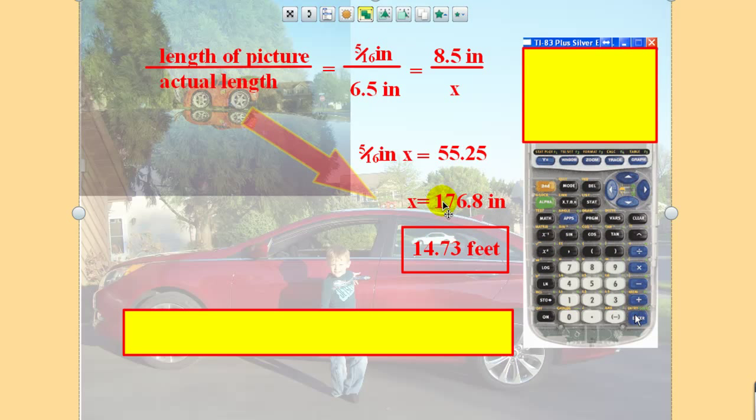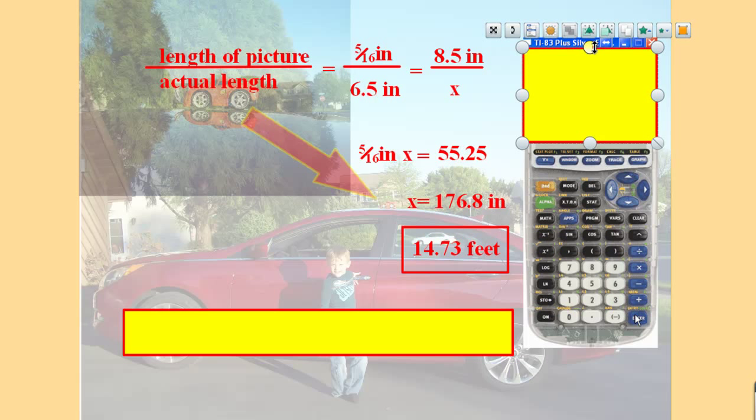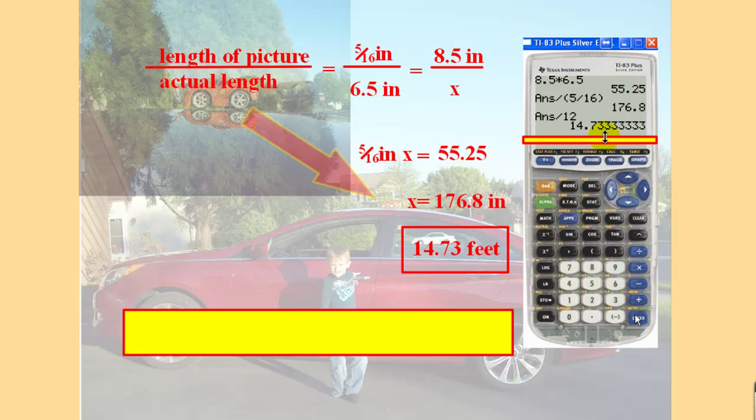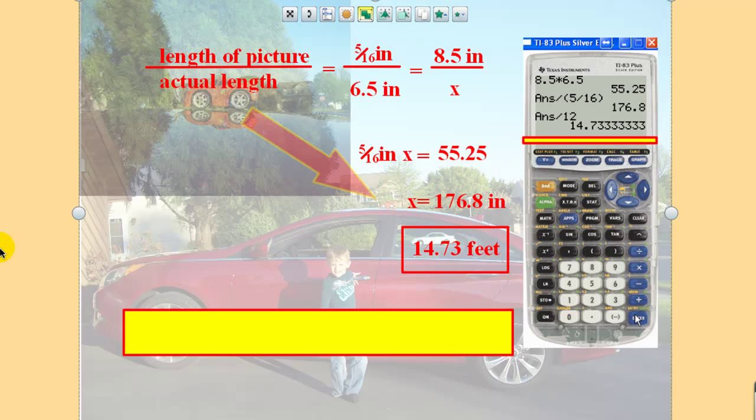And I would talk about how this is just an estimate. In real life, the Hyundai Sonata is around 180, I think 189 inches in length. But just because my perspective may have been off a little bit, that's enough to throw off this particular example. But it's still a nice way to be able to have them work with proportions, set up and do estimates. This is a great way to be able to estimate length of unknowns in the real world.